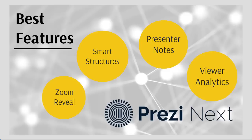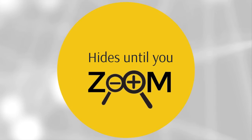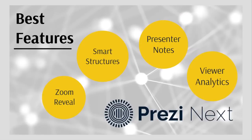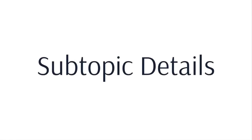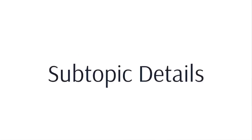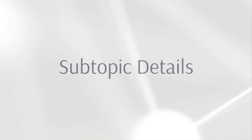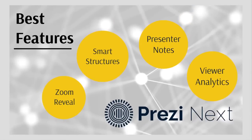One of the best features of Prezi Next is the Zoom Reveal, which hides content until you zoom up to it. Prezi Next smart structures hold your text and images, and they're made up of topics and subtopics. A fixed sequence starts on the overview, then zooms in to reveal a topic. From there, it zooms in to reveal details stored in the subtopics. After exploring each of the subtopics, it zooms back out to the overview.